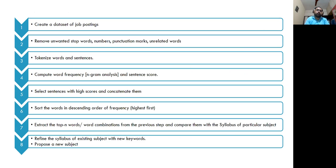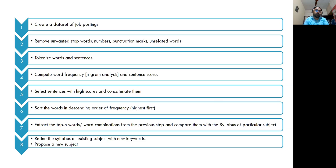This is the process we followed to develop our application. The first step is to create a dataset of job postings. To create the dataset, we visited indeed.com, naukri.com, Stack Overflow, and LinkedIn. From all those websites, job postings were copied related to a particular domain. Then we remove unwanted stop words, numbers, punctuation marks, and unrelated words. Removing unrelated words is very important, as is removing stop words, numbers, and punctuation marks.